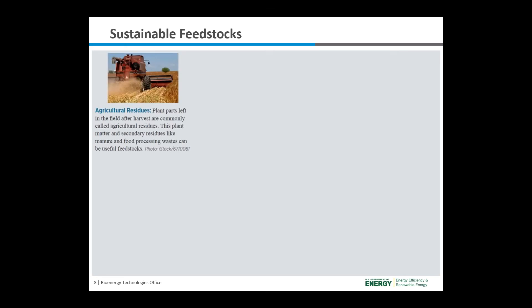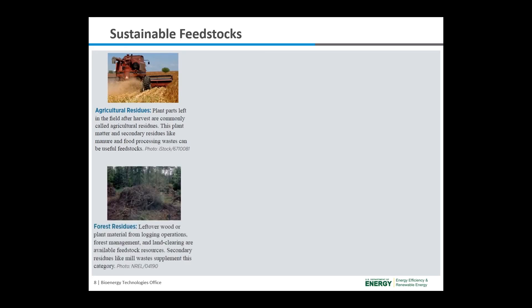Agricultural residues are plant parts that are left in the field after harvest. This plant matter and secondary residues like manure and food processing waste can be useful feedstocks for bioenergy. Forest residues are leftover plant or wood material from logging operations, forest management, and land clearing. Secondary residues like mill waste supplement this category.